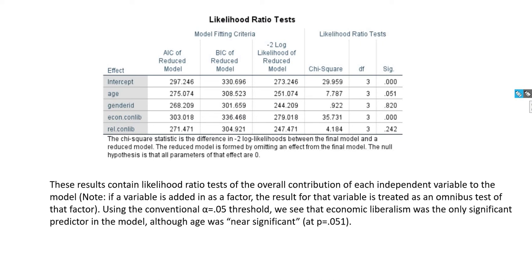Next we have likelihood ratio tests, which test the overall contribution of each independent variable to the model. Note that if a variable is added as a factor, the result is treated as an omnibus test of that factor. Using the conventional alpha at 0.05 threshold, we can see that the economic liberalism variable is statistically significant, and age is near significant with a p-value of 0.051.